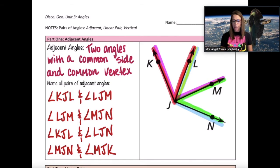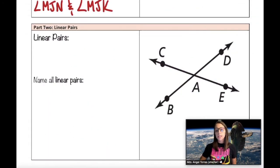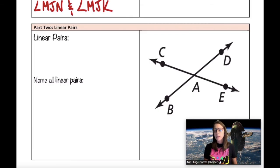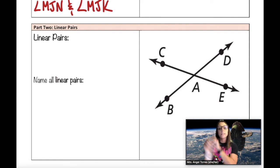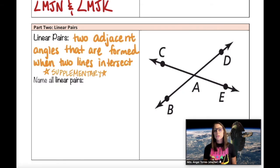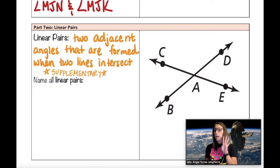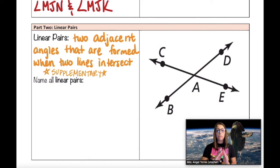Adjacent angles are two angles with a common vertex and a common side — in other words, they're right next to each other. A linear pair is a pair of adjacent angles that are also supplementary. It can also be described as a pair of adjacent angles formed when two lines intersect, like the diagram here. With two intersecting lines, we actually have four linear pairs. Let's name them.